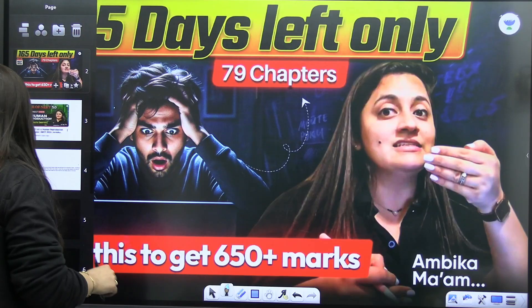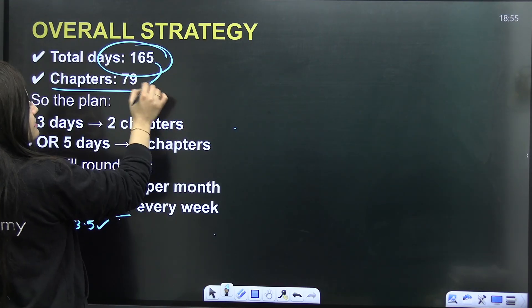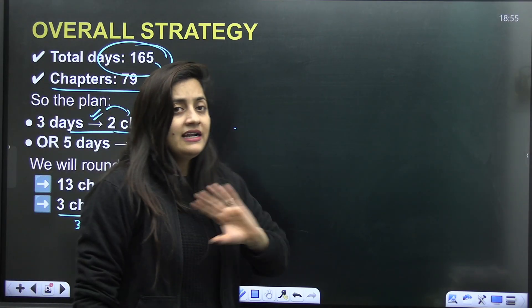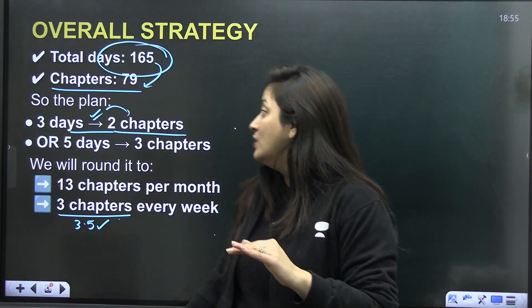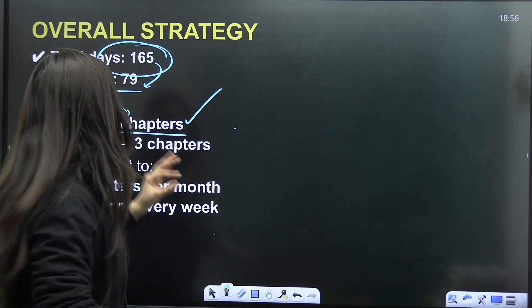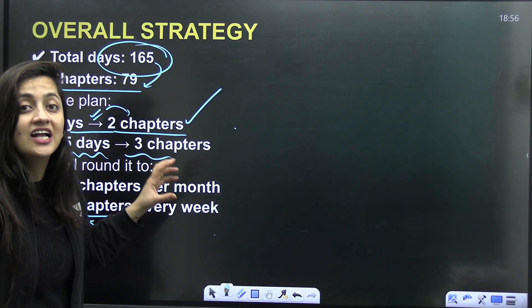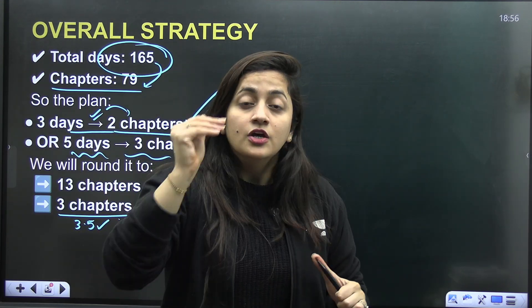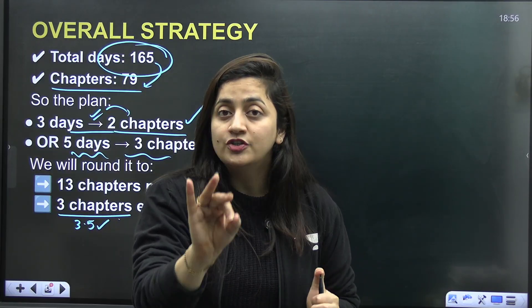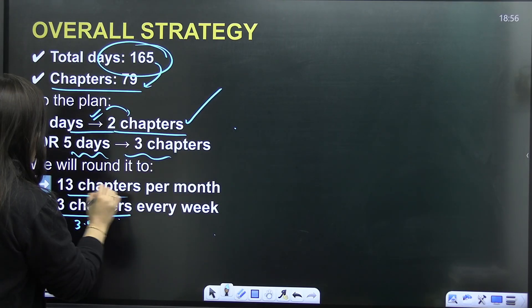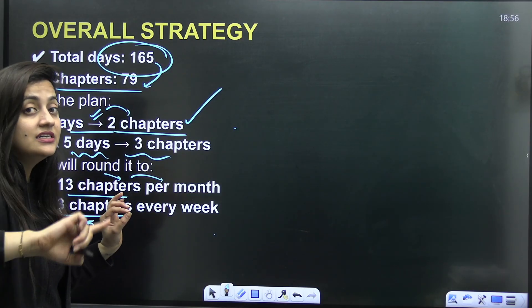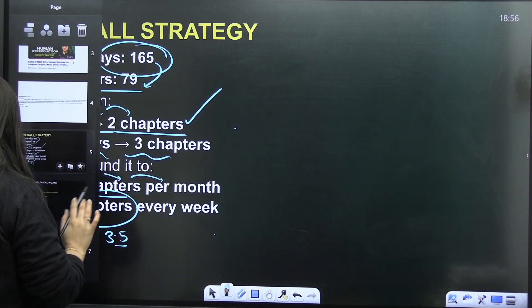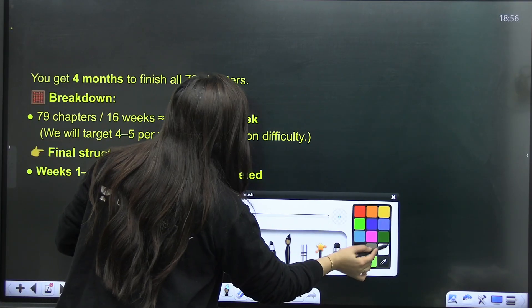Because here I'll talk about the detailed strategy that you all can follow. So as I said, overall, how many days are there? 165 days, 79 chapters. So basically, at least, at least I'm telling you, three days, in three days, you have to complete two chapters. Right now, I'm not talking about the physics, the chemistry, the biology, I'm simply telling you that three days, two chapters, this is the bare minimum that you have to do. So five days, three chapters, this is something that you have to achieve, you have to do. And when it comes to the chapter completion, it's not like that you have to move like this. No, it's literally not like that. You should know whatever chapters you are going to complete, you should know about such chapters in detail. Okay, so like if I have to round it, then I'll say 13 chapters per month, just imagine 13 chapters per month. So minimum three chapters every week, or you can make it 3.5 or even the four chapters every week, it depends on the difficulty level of the chapter as well.